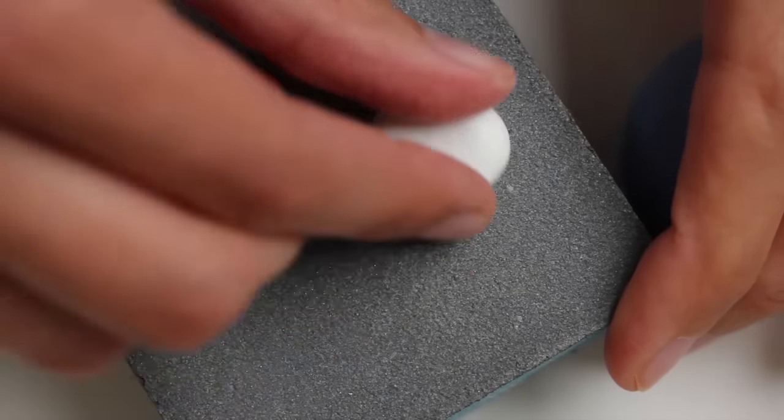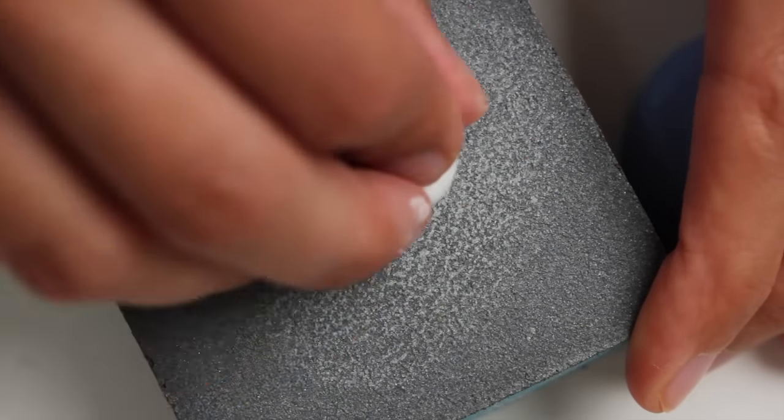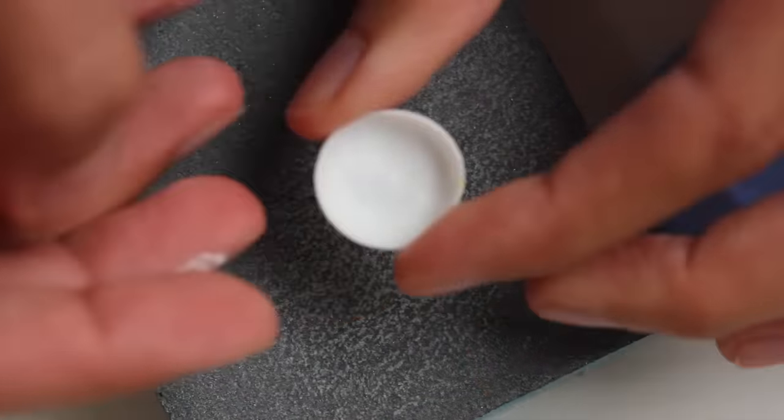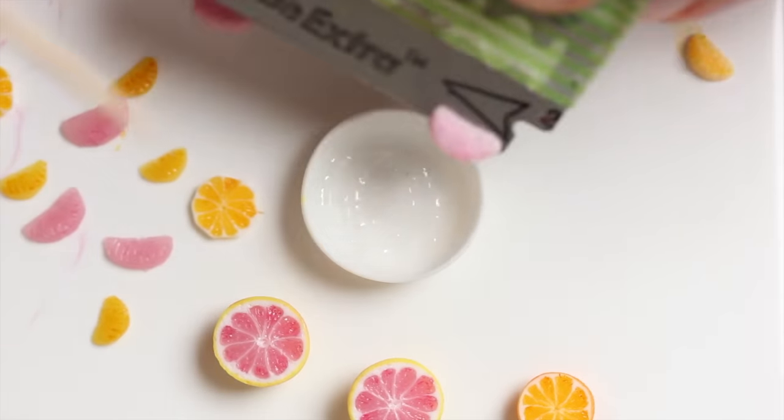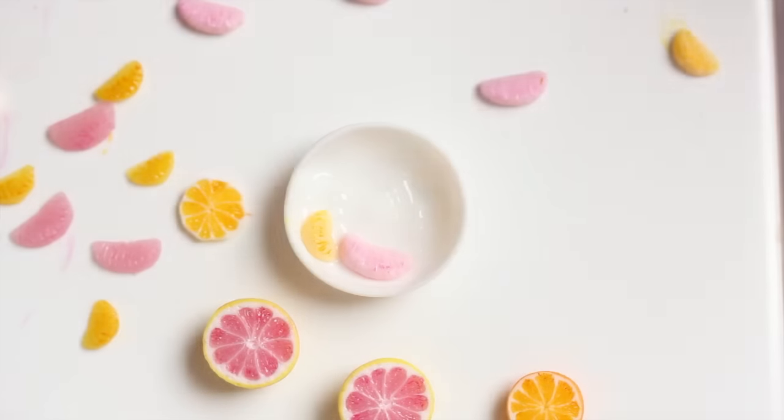I then bake inside the mold, and after baking I just sand so the plates get smooth and clean until I'm happy with it. And finally I'm just adding all the fruit slices inside of the bowl.